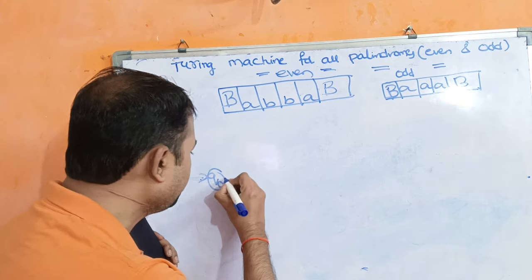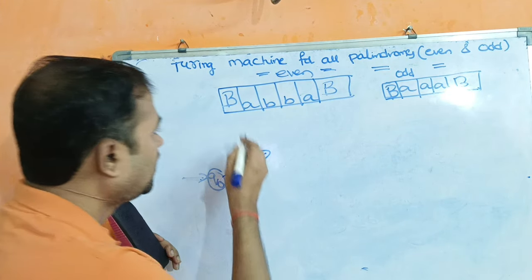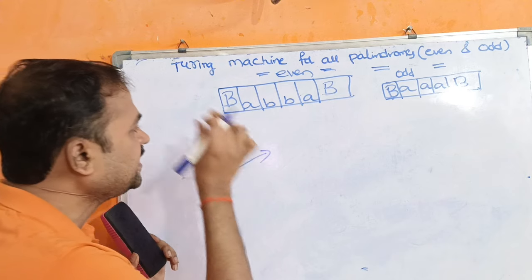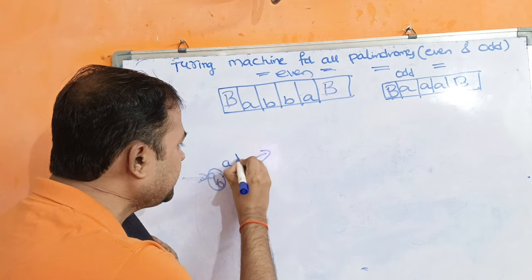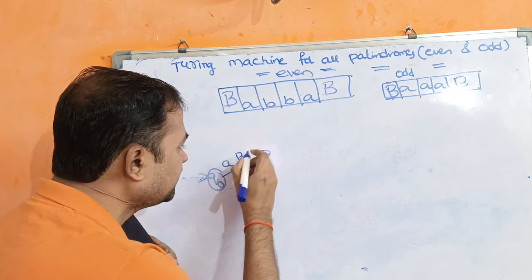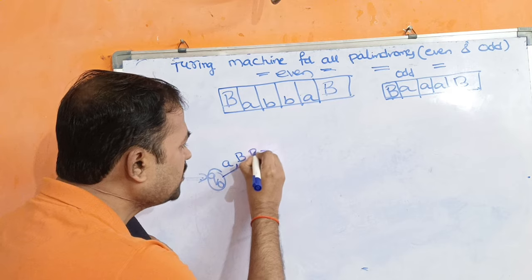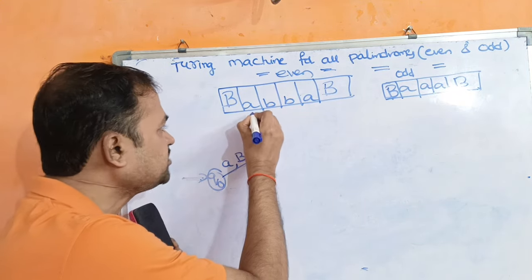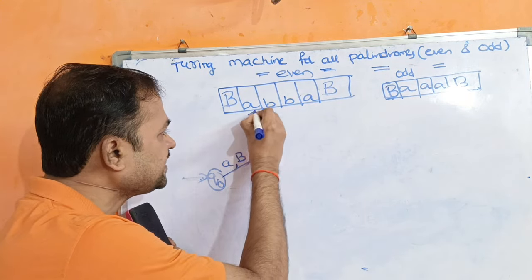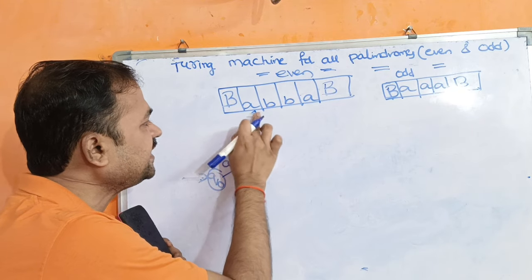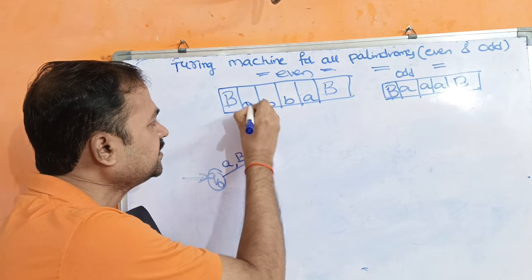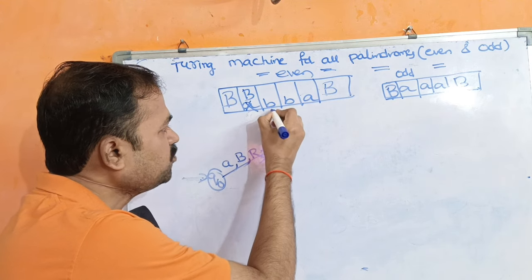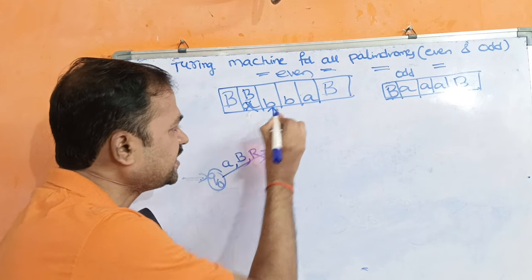Starting at state Q0, if we read A on Q0, we replace A by a blank symbol and move the head one position to the right. So initially we are at A; we replace it with blank and move right.